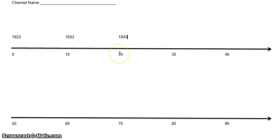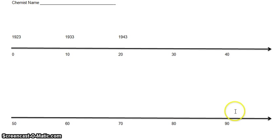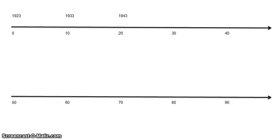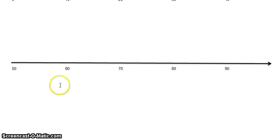Chances are there won't be many significant chemistry events between the ages of 0 and 20, but there might be some personal events, and some people are prodigies with early discoveries. Things will probably start to pick up between the ages of 20 and 30. Depending on when your scientist died, you may not need the second line, but if your scientist lived past age 90, you can scroll down or use the bottom of the page. Some people have had awards given after their death, and you can record those there if needed.